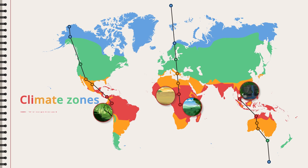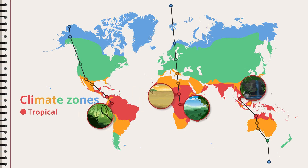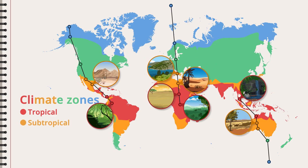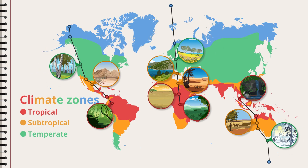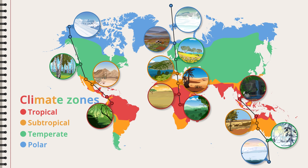Closest to the equator there is the tropical zone — it's warm the whole year round and rains a lot. Some distance from the equator there is the subtropical zone, with a dry and hot summer and a short mild winter. The temperate zone has four distinct seasons and large forests. And in the polar zone it's cold with almost no vegetation.